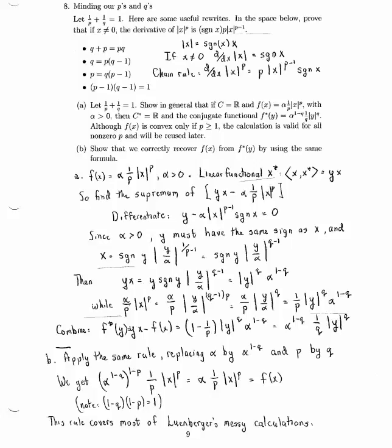So we have absolute value of y now to the q times alpha to the 1 minus q. We have to subtract off alpha over p times the absolute value of x to the p. Absolute value of x is y over alpha to the q minus 1.